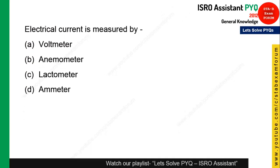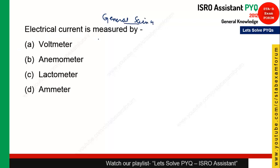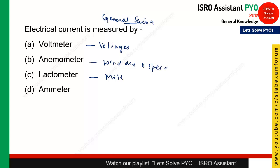The next question is from general science: electrical current is measured by what? A voltmeter measures voltage, a lactometer measures milk, an anemometer measures wind direction and speed, and an ammeter measures current. Option D — ammeter — is the right answer.